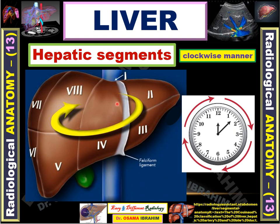Now I want to talk about some notes about the hepatic segments, which are arranged in a clockwise manner: segment 2, segment 3, segment 4, segment 5 — clockwise — then segment 6, rising up again clockwise to segment 7, and finally segment 8. These hepatic segments are classified in a clockwise manner. However, in sectional imaging like CT and MRI, we can differentiate them through landmarks, which I will describe in detail in the next slides.